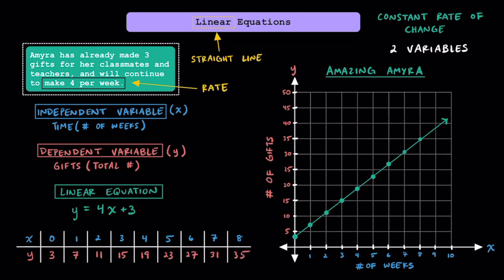Amira making four gifts per week is going to represent our rate of change. And because Amira has already made these three gifts, that's not going to change. Therefore, we can refer to it as our constant or our constant term.